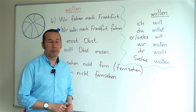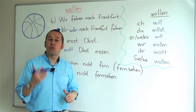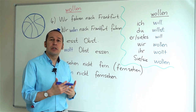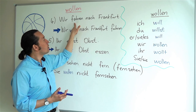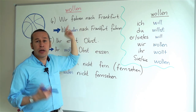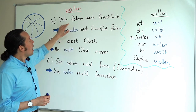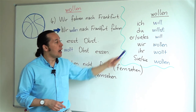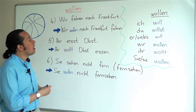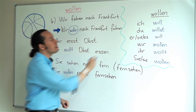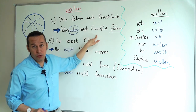Let's continue with the next examples. Here we have: wir fahren nach Frankfurt. Fahren stands for driving, but also traveling by vehicles — bus, train, motorcycle, or anything. So 'we are going to Frankfurt' is wir fahren nach Frankfurt. If I want to use wollen, I conjugate it as wollen and the main verb stays in the infinitive form: wir wollen nach Frankfurt fahren — we want to go to Frankfurt.